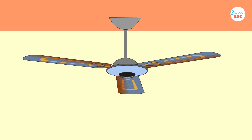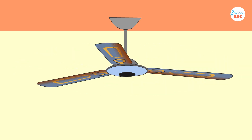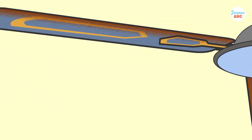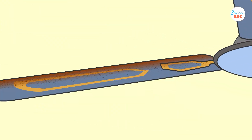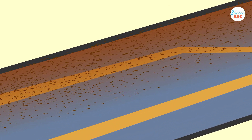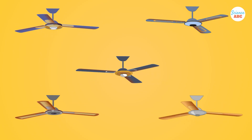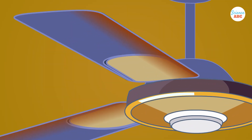As dust molecules encounter this charged edge while drifting through the air, they are drawn to it and subsequently attach. Due to friction, the fan blade's leading edge harbors the most charge, thus attracting the most dust. Combine this with the stickiness of dust particles, and that considerable layer of dust on fan blades begins to make more sense. However, this theory only provides an explanation for the dust on plastic ceiling fans.